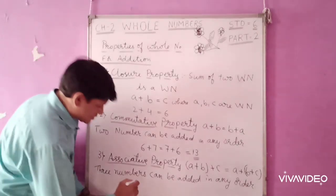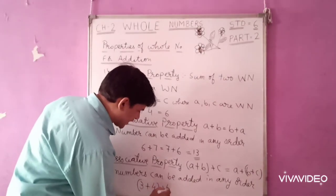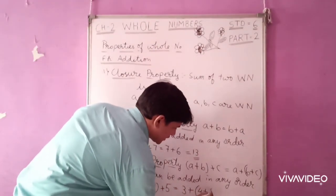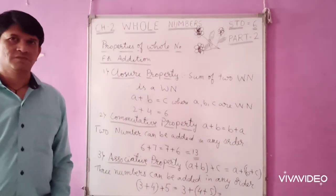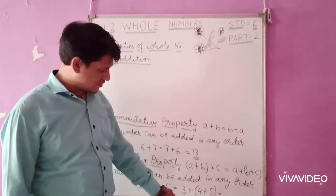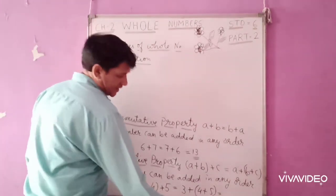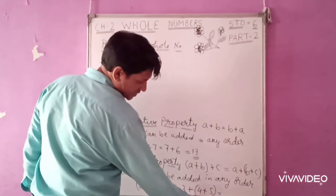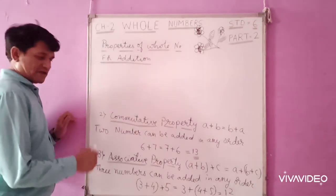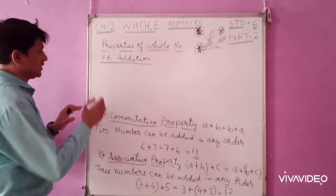For example, (3 plus 4) plus 5 equals 3 plus (4 plus 5). If you add the first bracket: 3 plus 4 is 7, and 7 plus 5 is 12. If you add the second bracket first: 4 plus 5 is 9, and 9 plus 3 is 12. So the answer is 12 in any order. Three numbers can be added in any order.